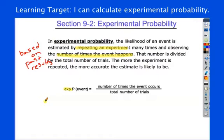Notice how this is similar to yesterday's. Yesterday's ratio was the number of ways an event could happen to the total number of possibilities. Now, we've switched the language, so it's the number of times it did happen to the total number of times we tried.